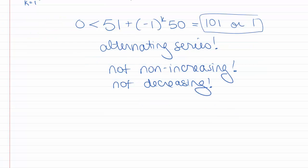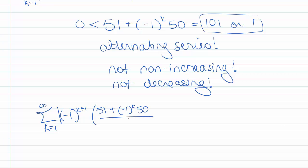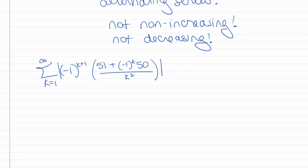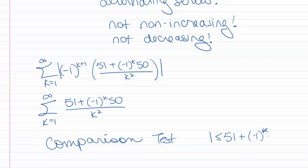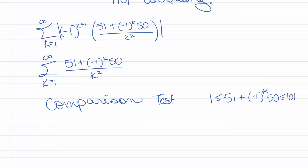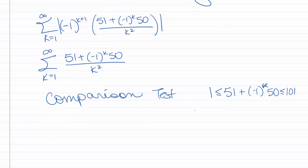Let's look at the sum k goes from 1 to infinity of the absolute value of negative 1 to the k plus 1 times 51 plus negative 1 to the k times 50 over k squared. That absolute value is going to get rid of the negative 1 to the k plus 1 in the front. So this is the sum k goes from 1 to infinity of 51 plus negative 1 to the k times 50 over k squared. This series is a good candidate for the regular comparison test. We know that 1 ≤ 51 + (-1)^k · 50 ≤ 101. Dividing through by k squared, we get 1/k² ≤ (51 + (-1)^k · 50)/k² ≤ 101/k².